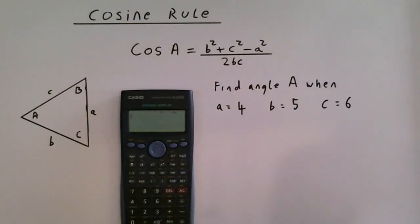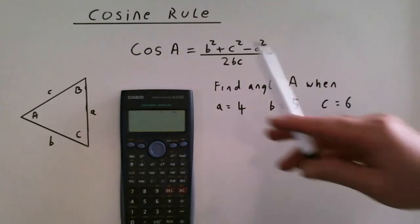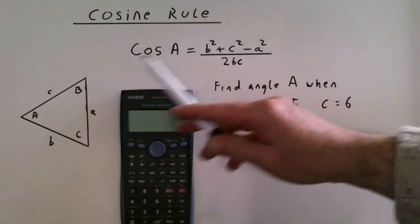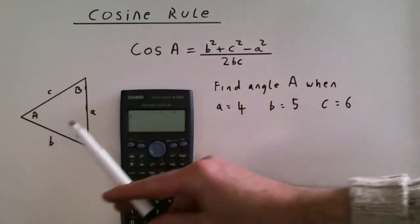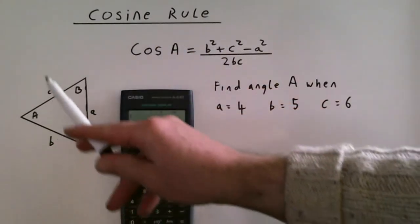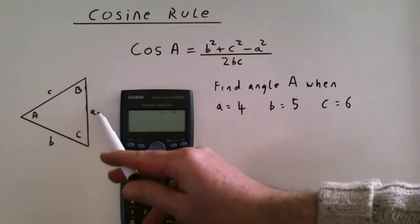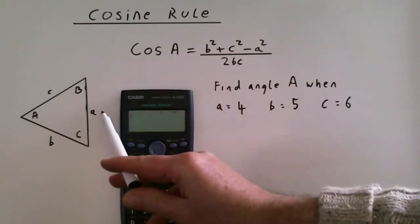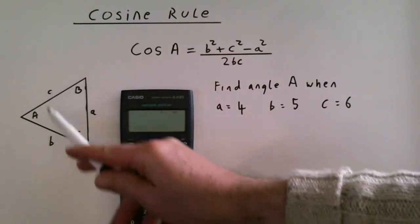The cosine rule is another rule that can be used when you don't have a right angle triangle and you need to find bits of a triangle when you've got other parts. The rule states the cosine of angle A, which is that one there, equals b squared plus c squared minus a squared divided by 2 times b times c.